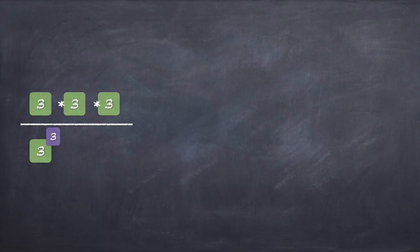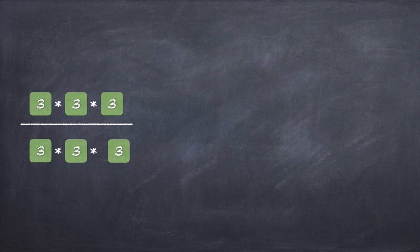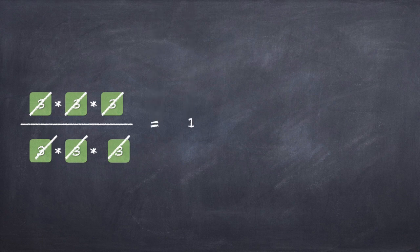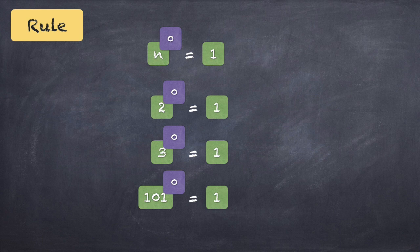We looked at this proof earlier — how to get to the idea of a number raised to 0 being 1. Say you have 3 raised to 3 divided by 3 raised to 3. You have three 3s in the numerator and three 3s in the denominator; all of them get cancelled and you are left with 1. You also know that 3 raised to 3 divided by 3 raised to 3, according to rule 2, should be 3 raised to 3 minus 3, which is 3 raised to 0. So from this you can connect that 3 raised to 0 is 1. You can run the same proof for any number, so any number raised to 0 will give you 1.